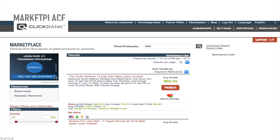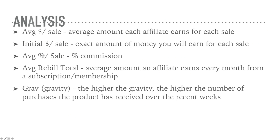Let's go over what these different stats mean, including what gravity means. The average dollars per sale is the average amount each affiliate earns for each sale. The initial dollars per sale is the exact amount of money you will earn for each sale. Average percent per sale is the percent commission that you're going to make every time you make a conversion or a sale.